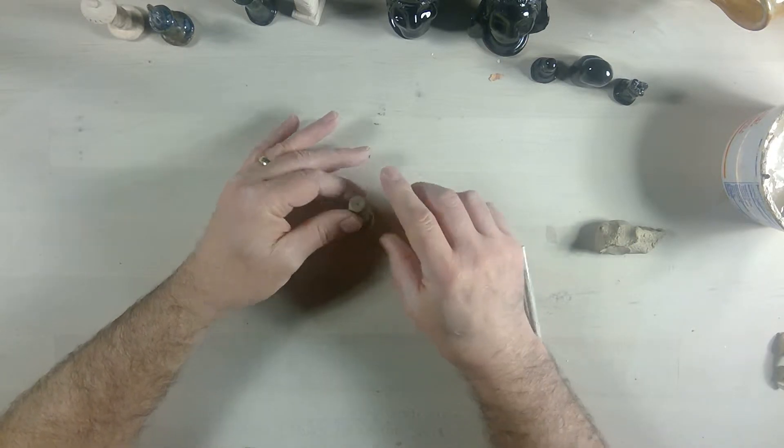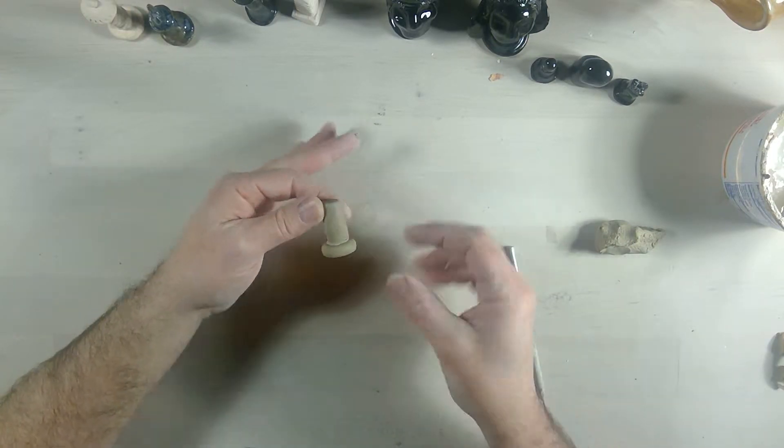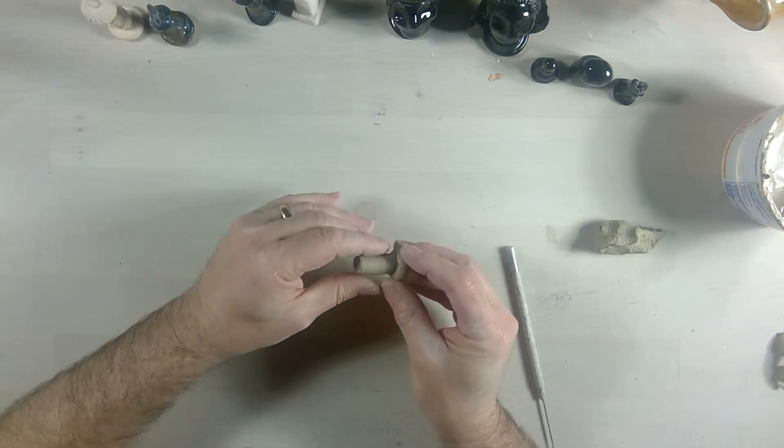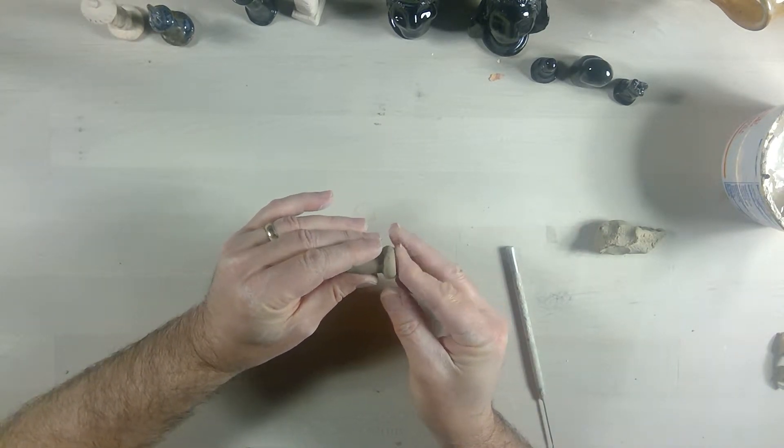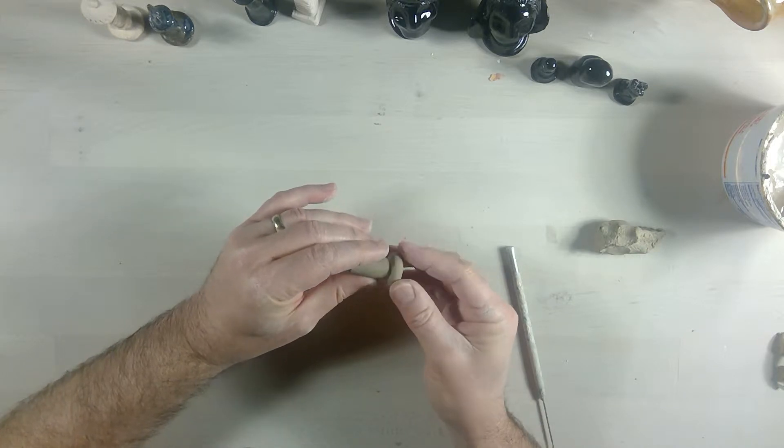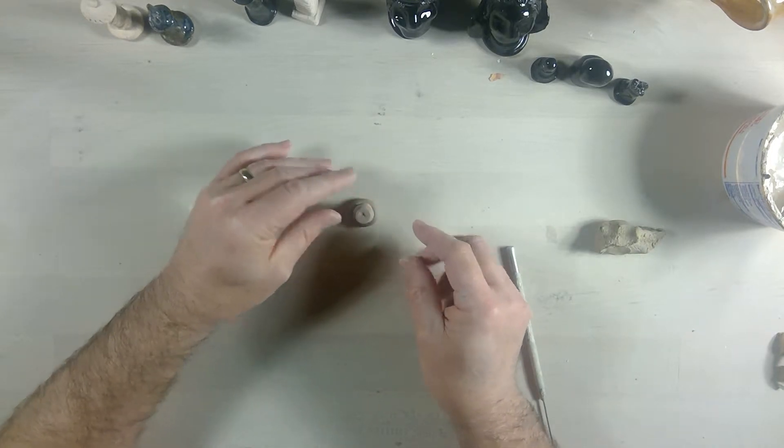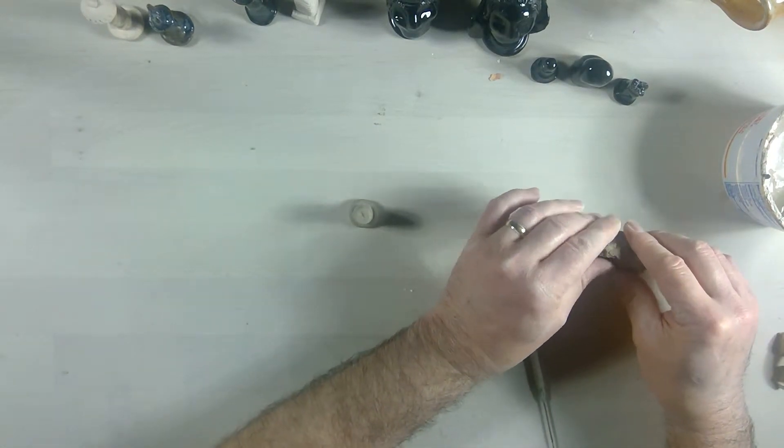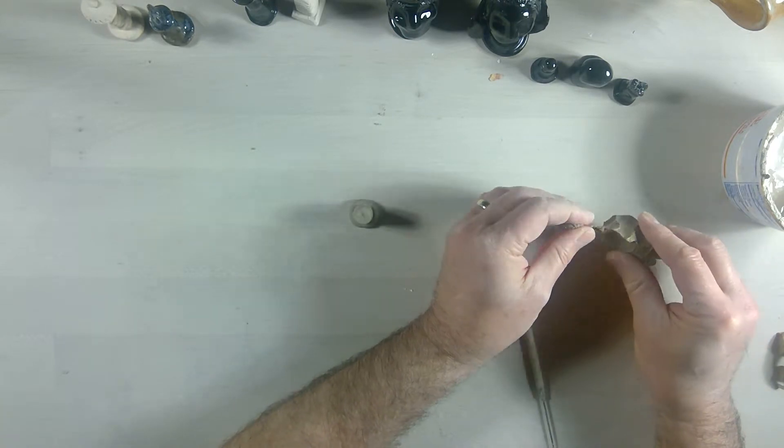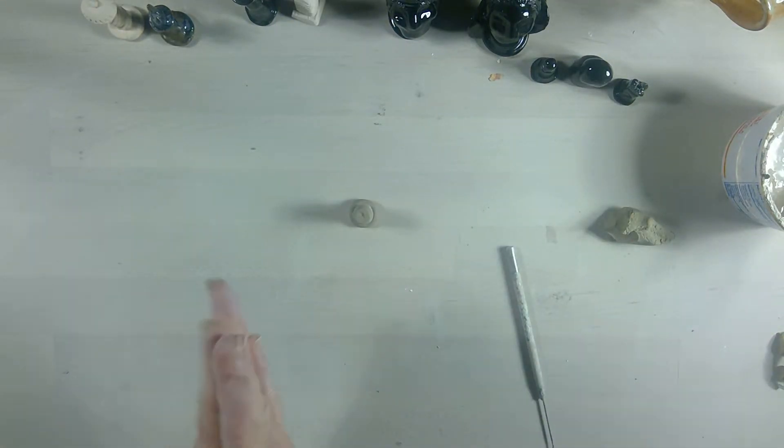I'm going to just push down on it like that. So now I have the game token and piece. Got to move it over a little bit to the center. So I got the base and I got a body on it.